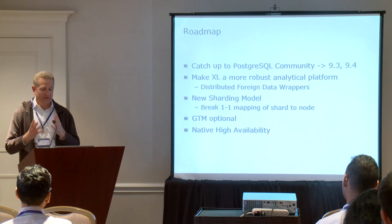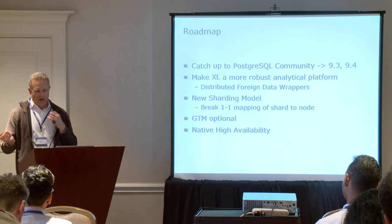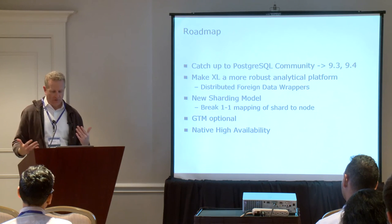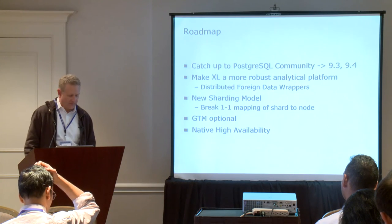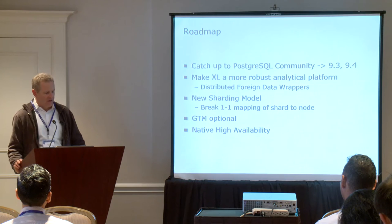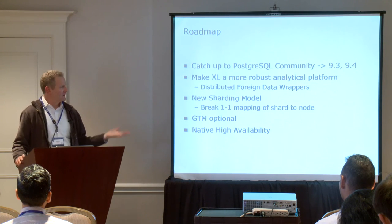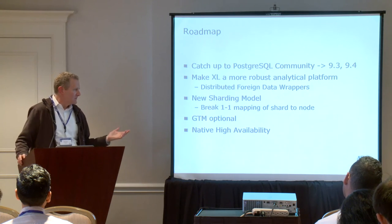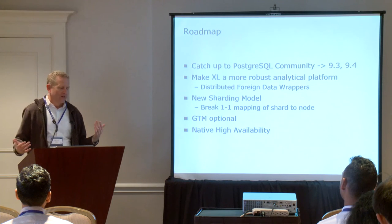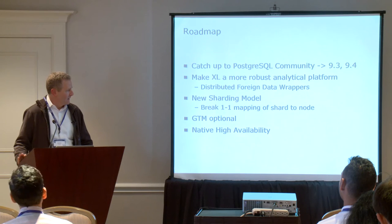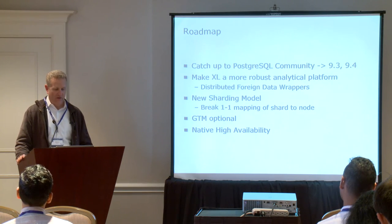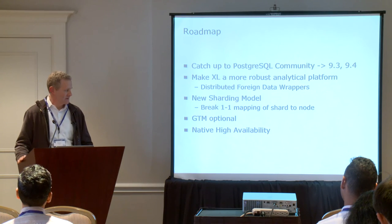I'd like to change sharding — instead of having standbys for individual data nodes, break the one-to-one mapping of shard to node so we can have multiple shards in multiple locations, giving more flexibility for high availability. For data warehousing with a simple bulk load process once a night, you may not need GTM if it's not a highly write-concurrent workload — so we could turn that off. And native high availability is probably the number one complaint we hear — people really want to use this with high availability, but that's going to be a bit of an effort.